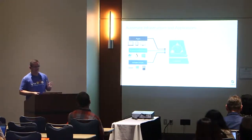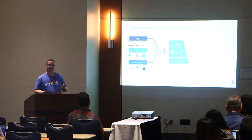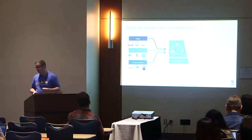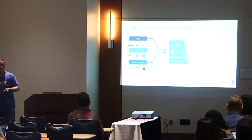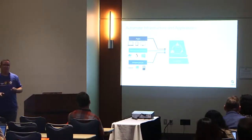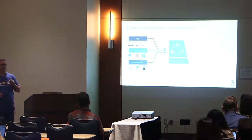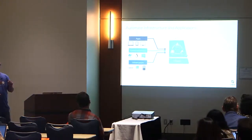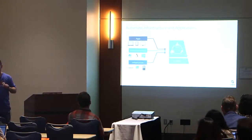The Chef server provides the policy — the description of the desired state — for that node. The node downloads that and then makes sure it's following the desired state. What we're going to talk about today is the local development workflow you'll go through as you're describing that infrastructure as code. We're going to use a thing called the Chef Development Kit, sometimes called the Chef DK.